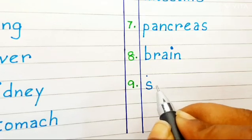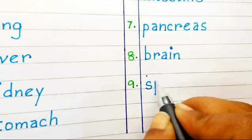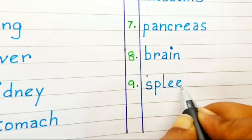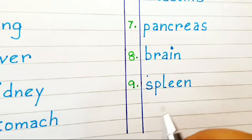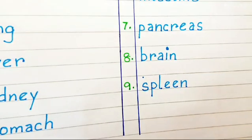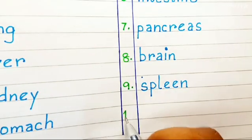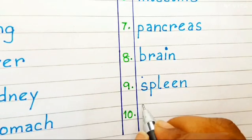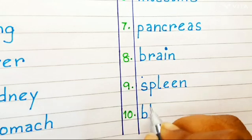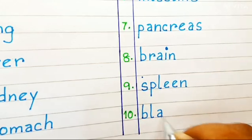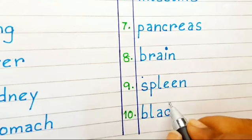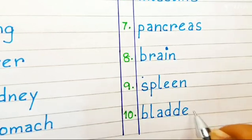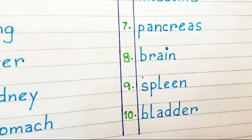Number 9: Spleen. S-P-L-E-E-N. Spleen. Number 10: Bladder. B-L-A-D-D-E-R. Bladder.